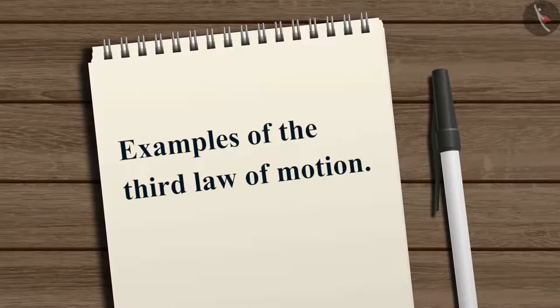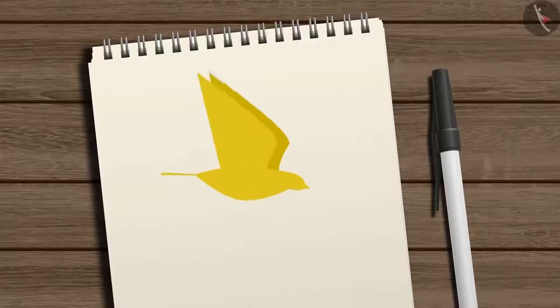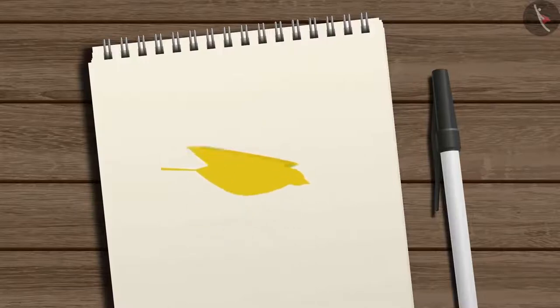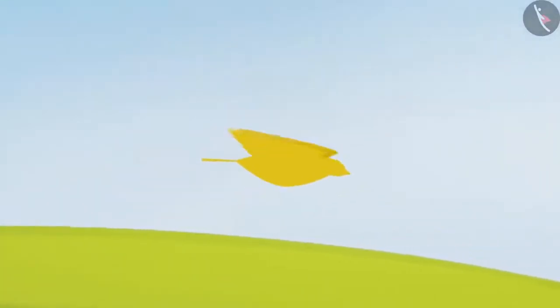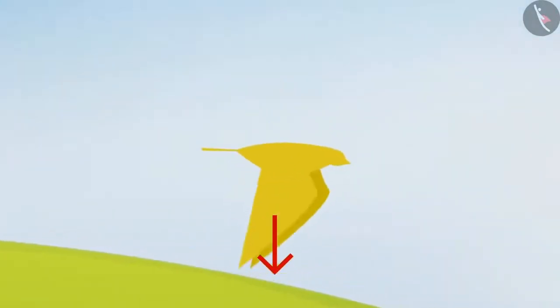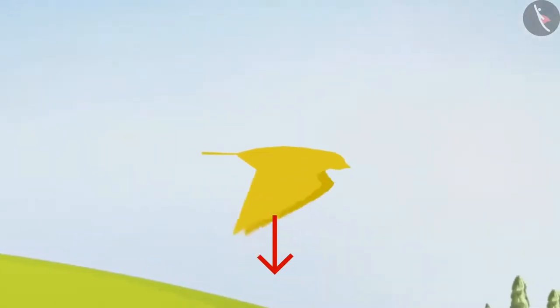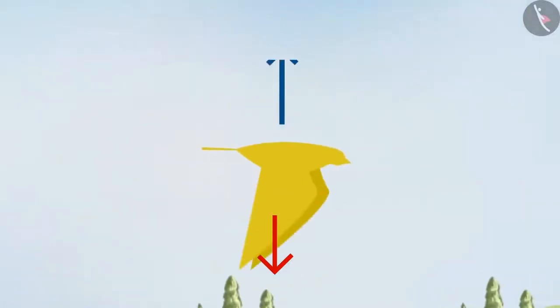Let us look at two different examples to understand the third law of motion better. Example one: consider the case of a bird flying by flapping its wings. When a bird flaps its wings downwards trying to lift off, it creates a force that pushes the air downwards, which results in an equal and opposite force that pushes the bird upward and helps it fly into the sky.